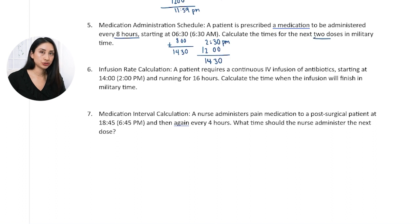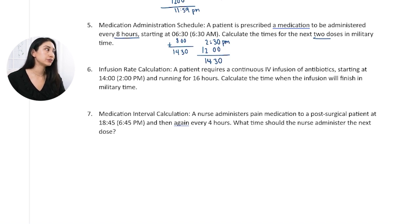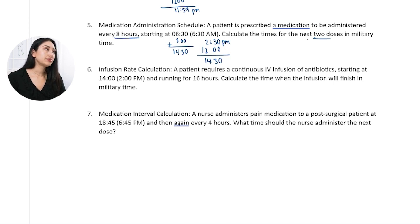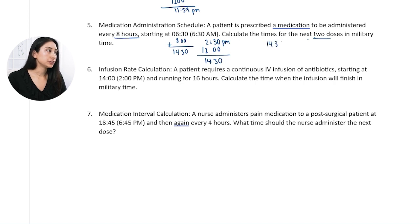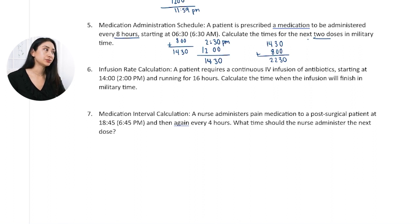The question asks for the next two doses. So the first dose is at 1430. For the second dose, I add another eight hours: 1430 plus 800 equals 2230. That is in military time. So my second next dose is at 2230.